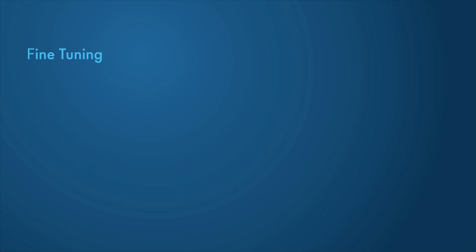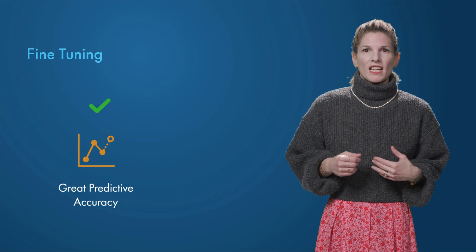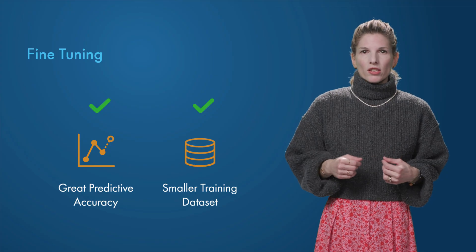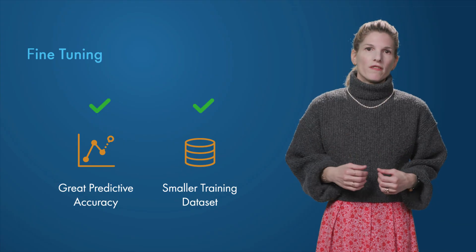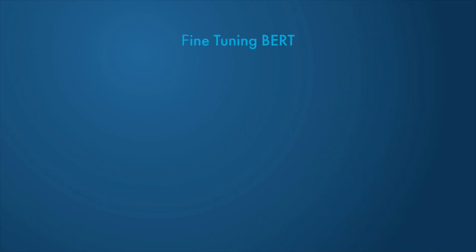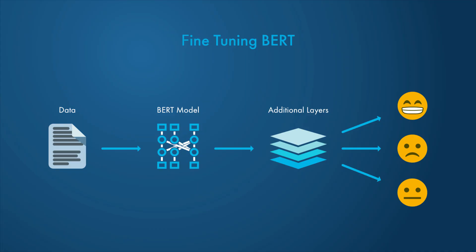A way around this is fine-tuning. It means tweaking a pre-trained model for a different task. Fine-tuning allows you to use a smaller dataset to retrain a large model and still achieve great accuracy. For example, you can add additional layers to BERT and retrain it with a small dataset to perform sentiment analysis.